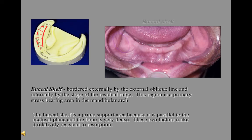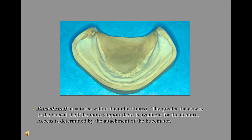The buccal shelf is bordered externally by the external oblique line and internally by the slope of the residual ridge. This region is the primary stress-bearing area of the mandibular arch. The buccal shelf is a prime support area because it is parallel to the occlusal plane and the bone is very dense, making it relatively resistant to resorption. The greater the access to the buccal shelf, the more support available for the denture. Access is determined by the attachment of the buccinator muscle.